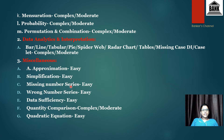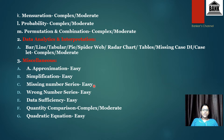Next is missing number series, which is easy, and wrong number series, which is also easy — they'll ask either one. We can expect four to five questions in prelims and one or two questions in mains.